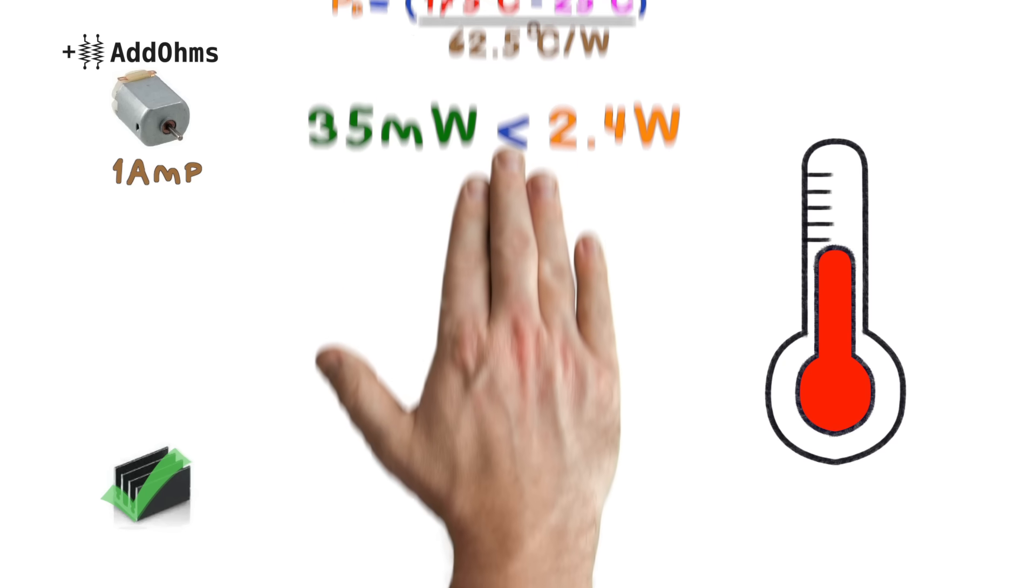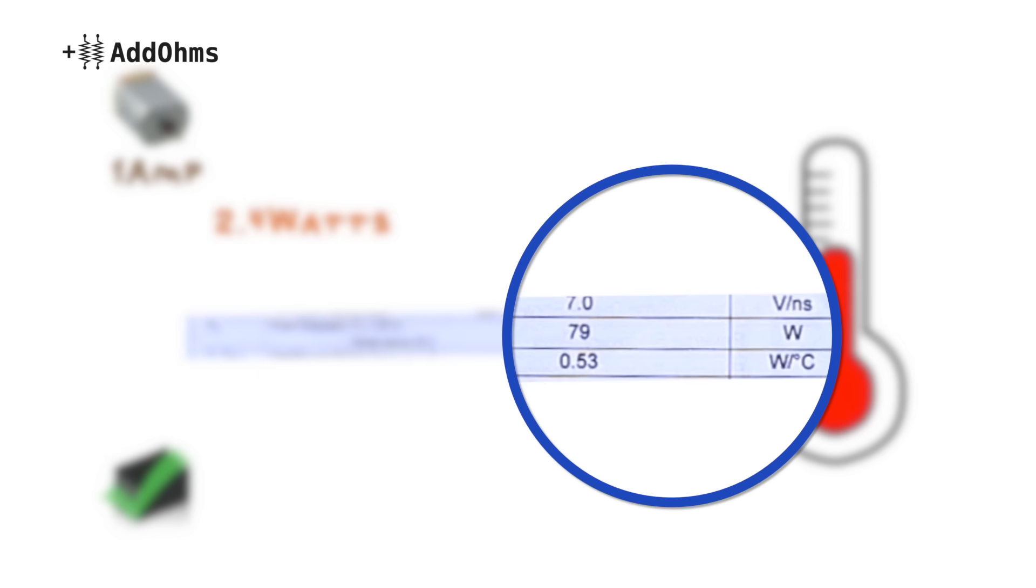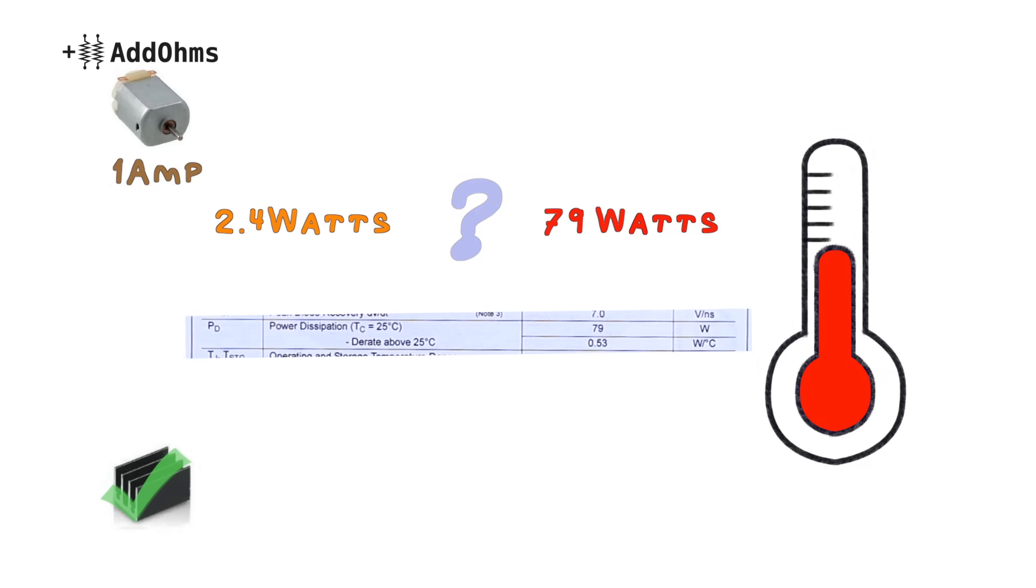Now, you might be wondering, how can the number we calculate be 2.4 watts when the datasheet clearly said 79 watts? And that's a really great point. The 79 watts is if we had the ability to cool the transistor's case to 25 degrees C, which means you have to be using some kind of heatsink, but we're going to cover more on that in a later video.